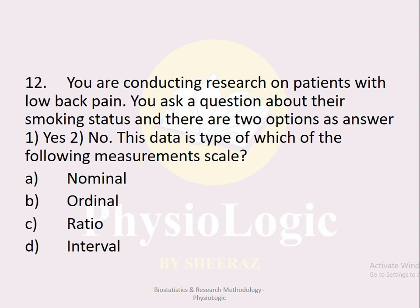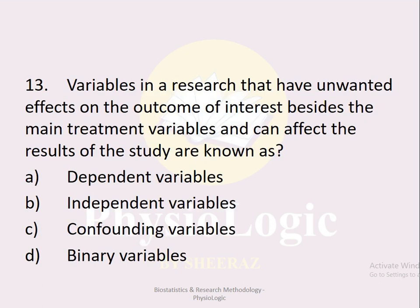MCQ number twelve: You are conducting research on patients with low back pain and ask a patient about their smoking status with two answer options — yes or no. The data is of which measurement scale? Option a nominal, option b ordinal, option c ratio, option d double. The correct option is option a, nominal. When data can be divided into categories such as yes or no, it falls under nominal data.